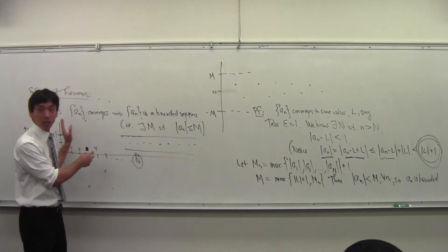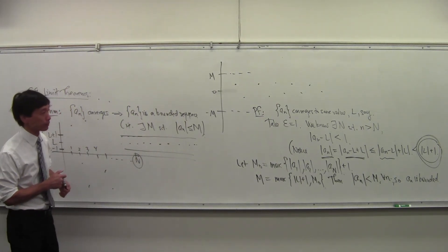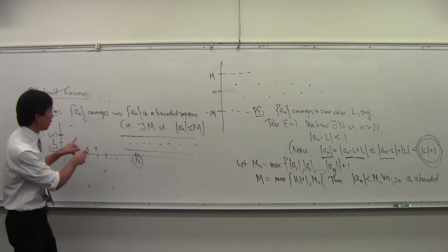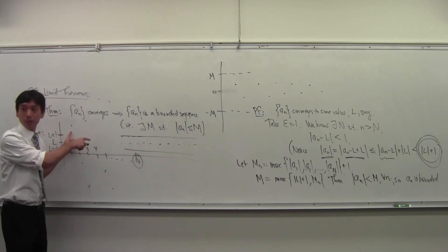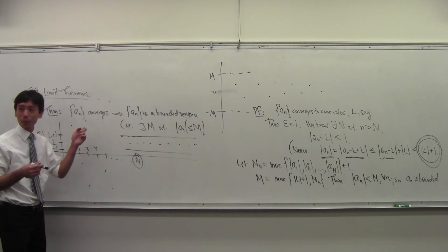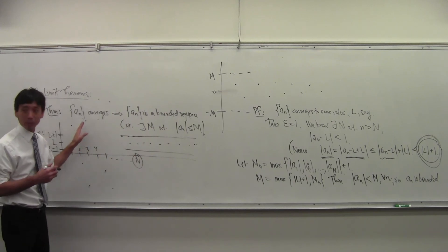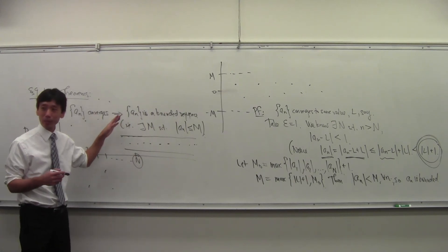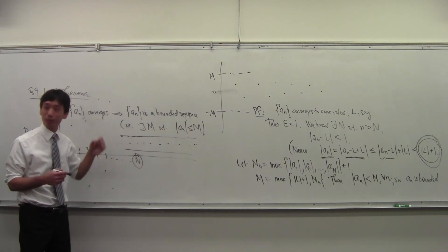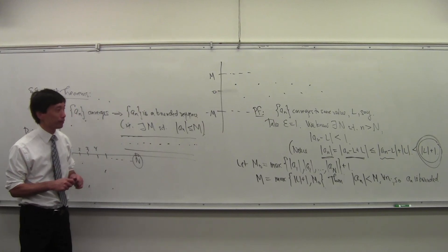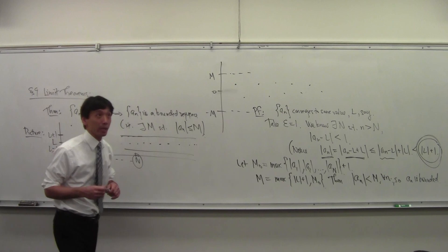These finitely many guys are dominated. For that first step where you say let M0 be the maximum — [Student: What if the maximum in that sequence isn't finite?] These are all finite values. [Student: They all have to be finite?] Yeah, because when we say a sequence, we mean a sequence of real numbers. We don't mean a sequence that allows an extended real number. Okay, that's it for today.